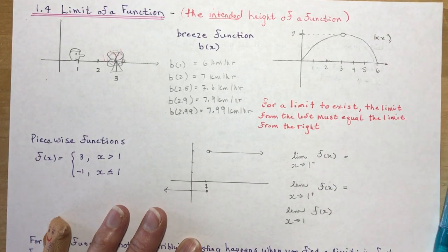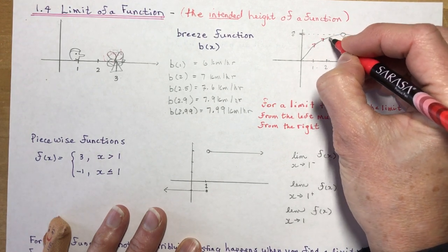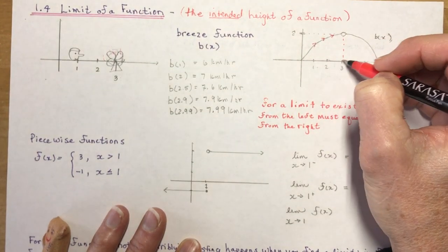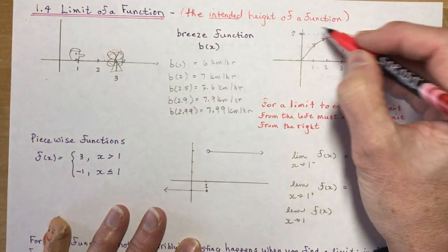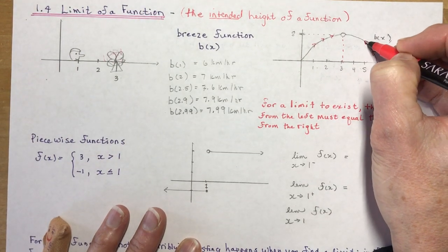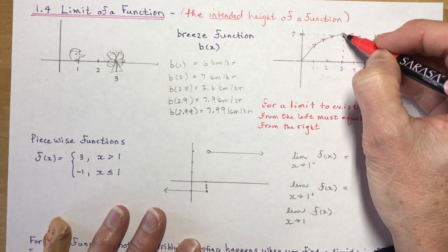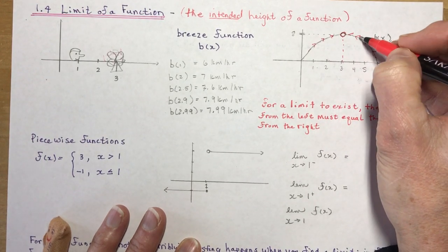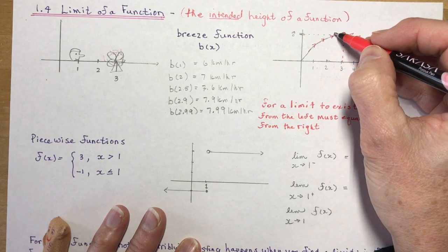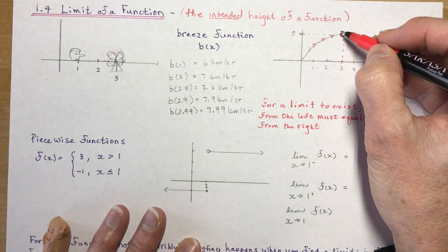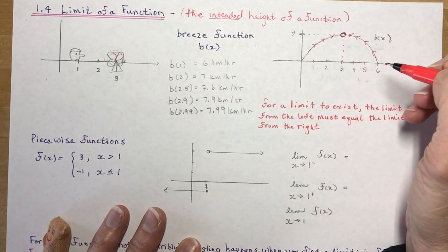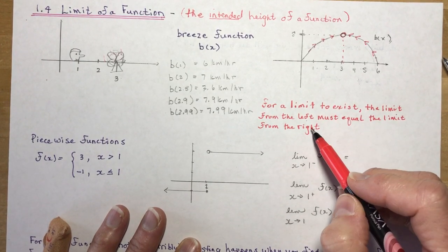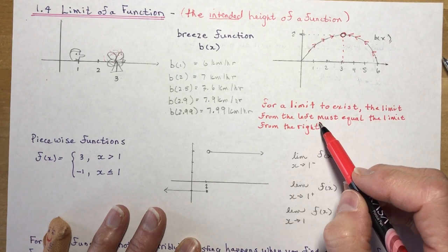If I approach this fan from the left, I get to 8 km/h at x=3, and if I come from the right, it's the same speed. So the limit from the left equals the limit from the right, the limit exists, and the limit is 8. For a limit to exist, the limit from the left must equal the limit from the right — that's a two-sided limit.